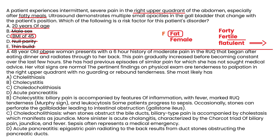Clinical vignette 2: A 48-year-old obese woman presents with a 6-hour history of moderate right upper quadrant pain that began after dinner and radiates to her back, gradually increasing before becoming constant. She has had similar episodes before. Vital signs are normal with tenderness on palpation but no guarding or rebound. The key clue is that vital signs are normal — meaning no fever — so this is probably not inflammation, allowing you to cross out cholecystitis and cholangitis.